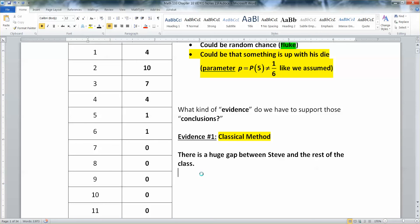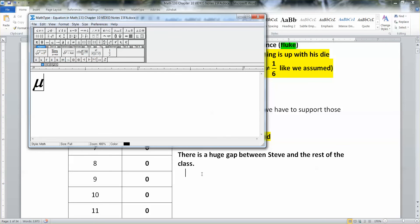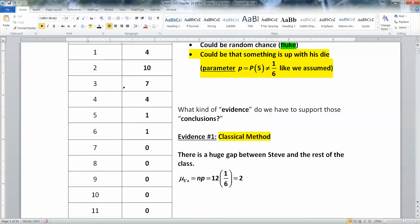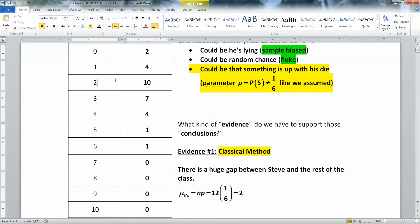As a matter of fact, we can figure out how big that gap is. So because this is a binomial experiment, we learned how to find the mean for the number of fives back in section 6.2, it's n times p, which would be 12 times 1 sixth, which is 2. Which is why we have such a large number of students at 2. This was an actual classroom. So the mean for your number of fives is 2.